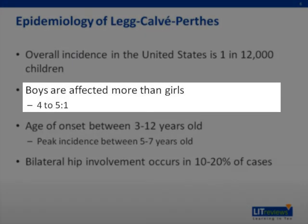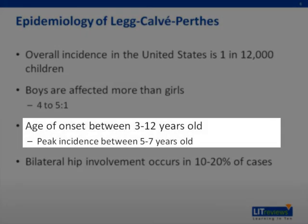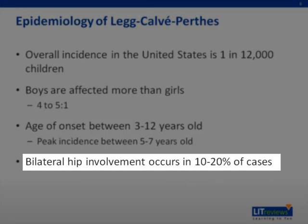Boys are affected more than girls, with a ratio of 4 to 5 to 1. Interestingly, Caucasians are the most affected race, and Legg-Calvé-Perthes occurs rarely in African Americans and Asians. The age of onset is typically in school-age children, with a peak incidence between 5 to 7 years old. Bilateral hip involvement can occur, but it is rare, typically affecting only about 10 to 20% of patients.